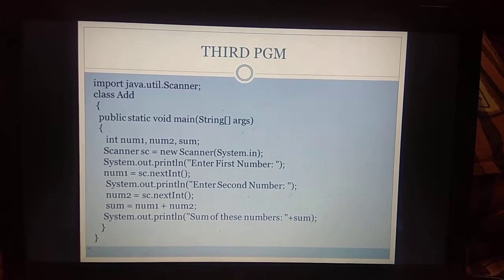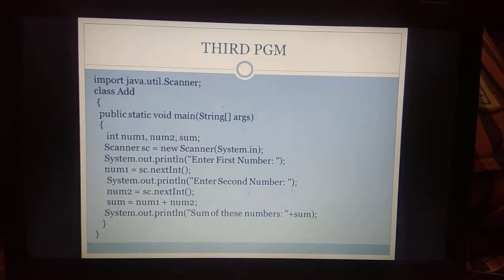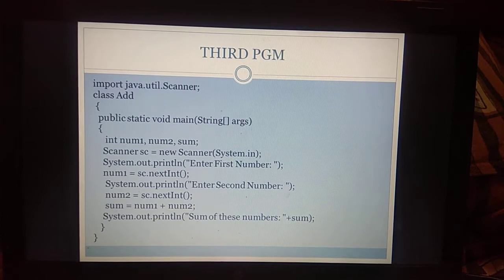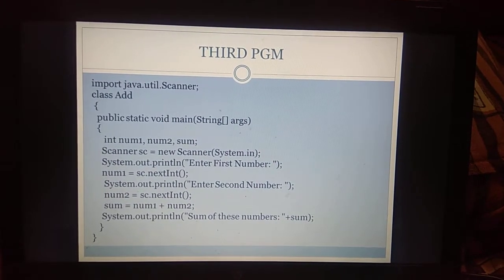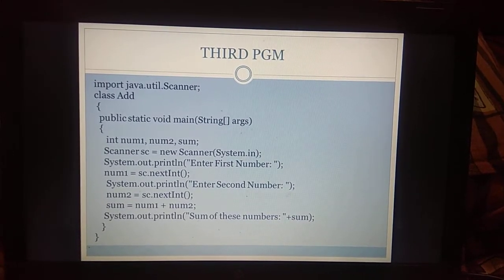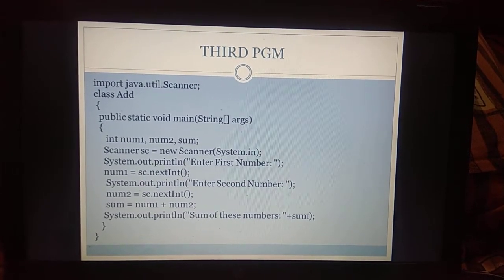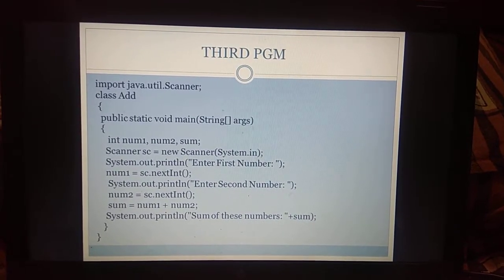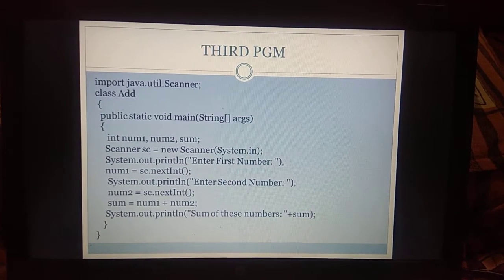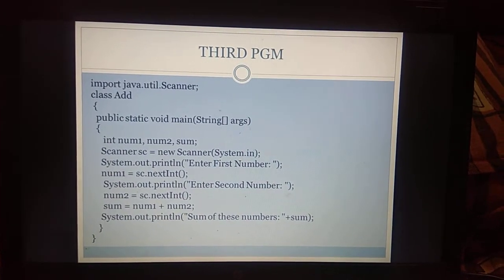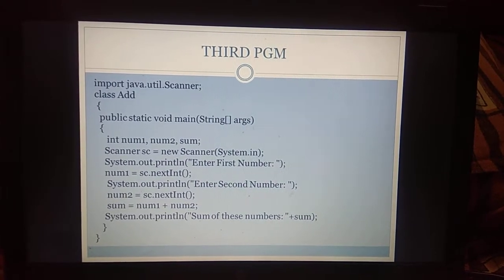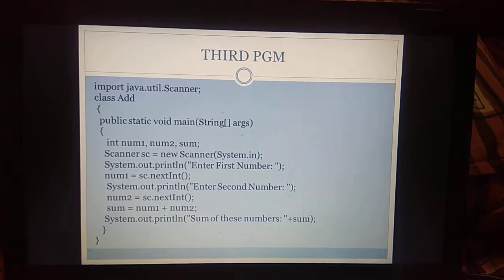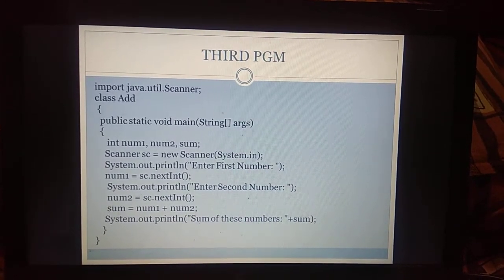Next, we are getting the first number from the user. For that we display a prompt: system.out.println 'Enter the first number'. Enter the first number will be displayed on screen, and the user enters the number. That will be retrieved by sc.nextInt — sc is the object created for the Scanner class. sc.nextInt will get the integer as input and that will be stored in num1. Then we get the second number: system.out.println 'Enter the second number'. The user enters the second number, which is stored in num2 using sc.nextInt.